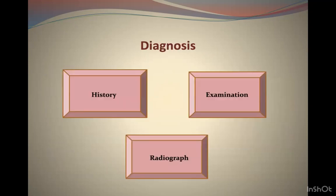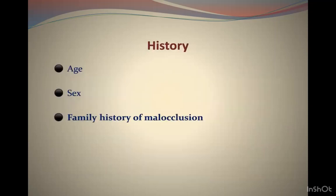Diagnosis is made through patient history, clinical examination, and radiographs. From history, we need to know the age, sex, and family history of malocclusion — these are the three key items. Clinical examination includes understanding whether the case is functional or true Class 3.